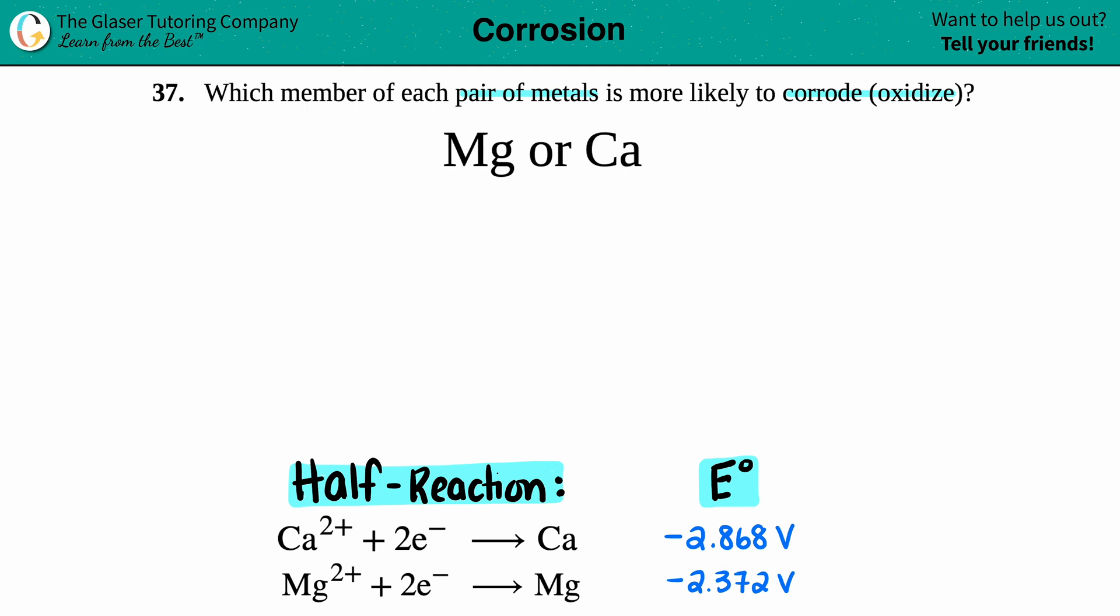But the thing is, when you do look at those half reactions, I notice that the electrons are on the left side. So the half reactions in the back of the textbook are always going to tell me reduction values, not oxidation. These are not corrosion equations.